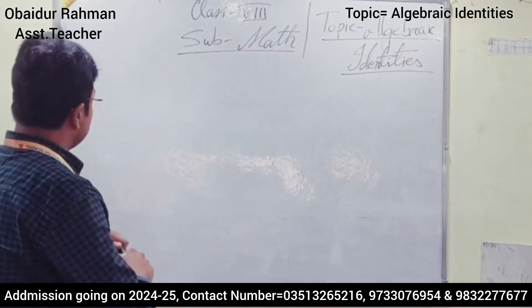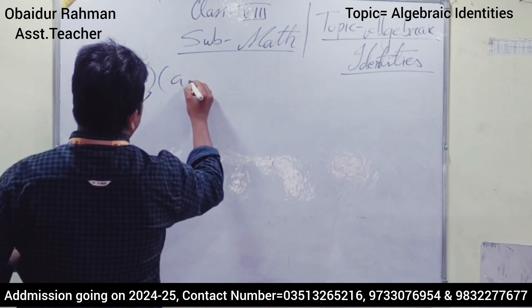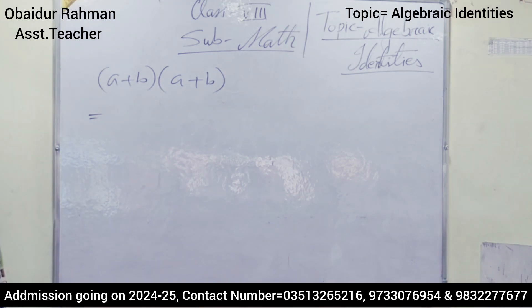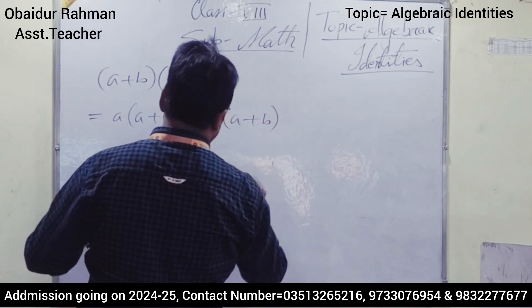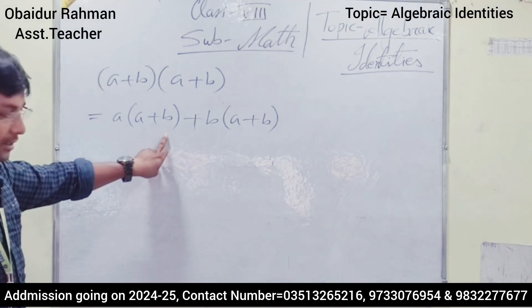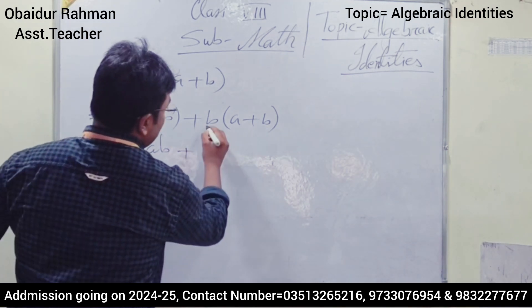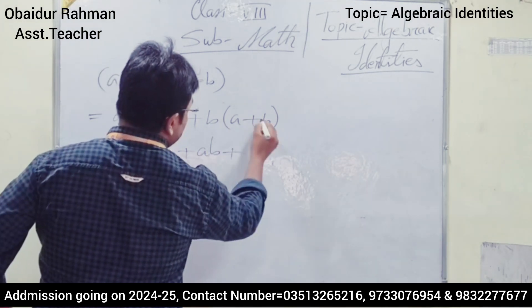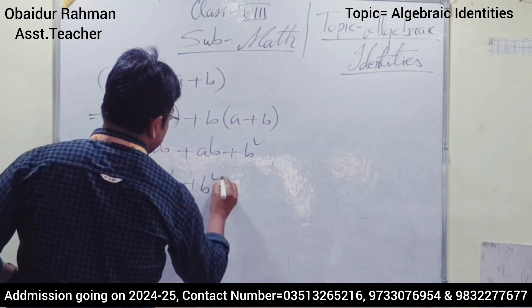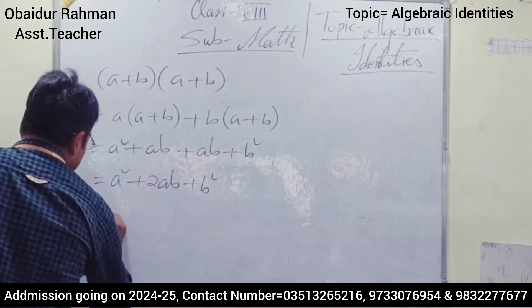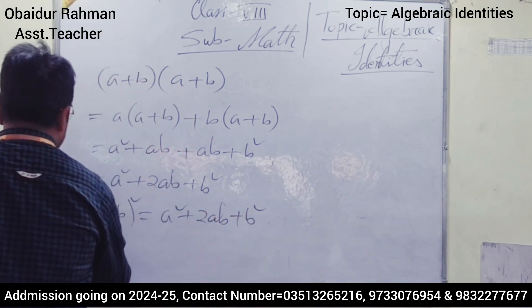The first law: consider (a + b) multiplied by (a + b). So (a + b) into (a + b) means a into (a + b) plus b into (a + b). That gives a² + ab plus ab + b², which simplifies to a² + 2ab + b². That's why we can write (a + b)² = a² + 2ab + b².